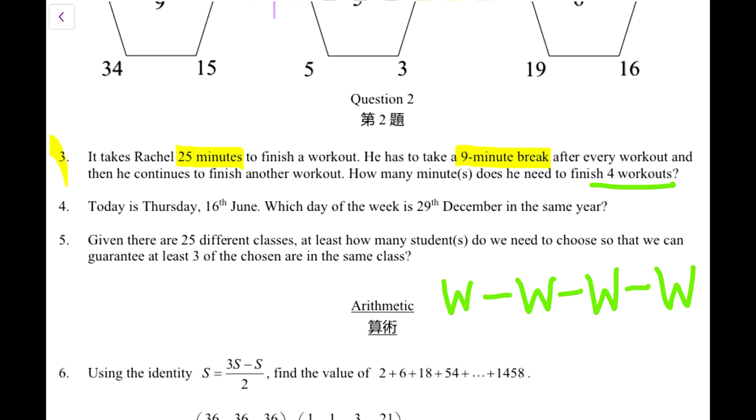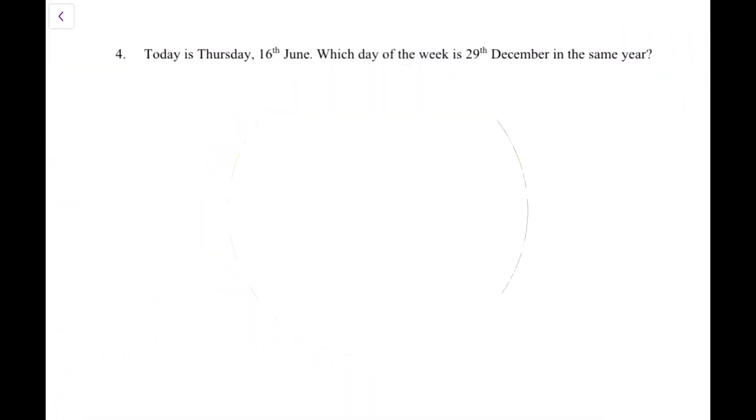So we can see that he has finished 4 workouts. That means 25 times 4, which is 100, 100 minutes. And because he has needed just 3 breaks, a 9-minute break each, so that's 27 minutes, 9 times 3. So in total, he has needed 100 minutes and 27. So that's a total of 127 minutes. So that's our answer for the question. He needs 127 minutes.